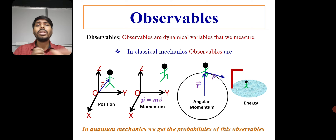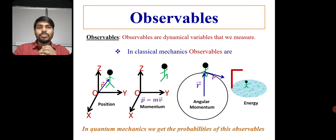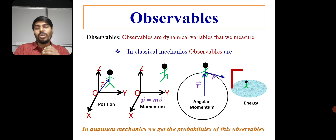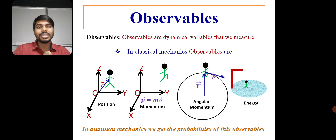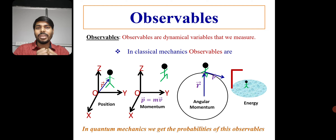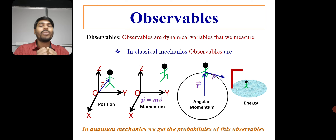But what about in quantum mechanics? In quantum mechanics, we cannot directly measure these observables — the position, momentum, or energy of the particle — in the same way. Measuring position and momentum simultaneously is not so easy in quantum mechanics. So how do we get these observables in quantum mechanics? For that, we have to use the concept of operators.